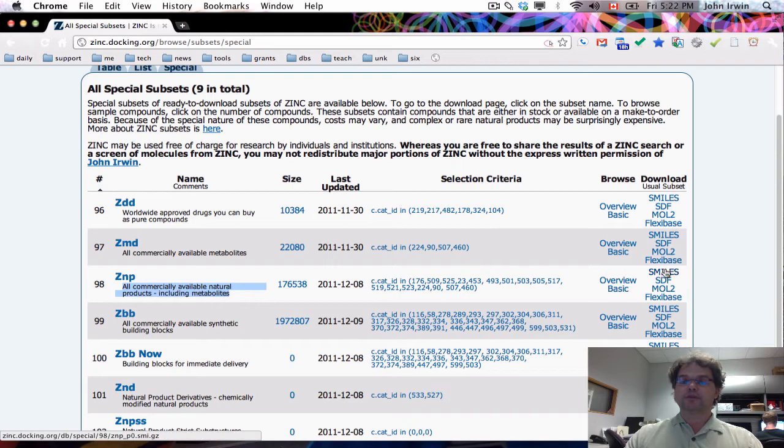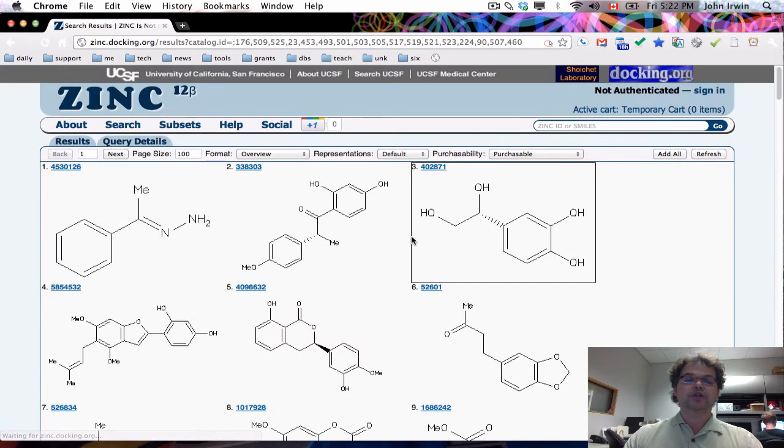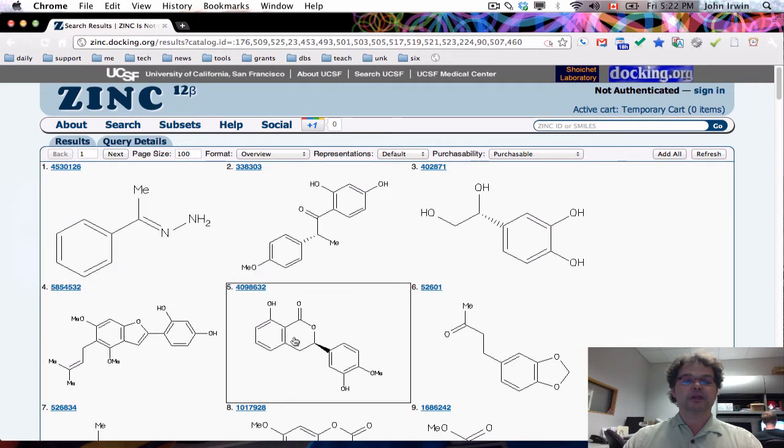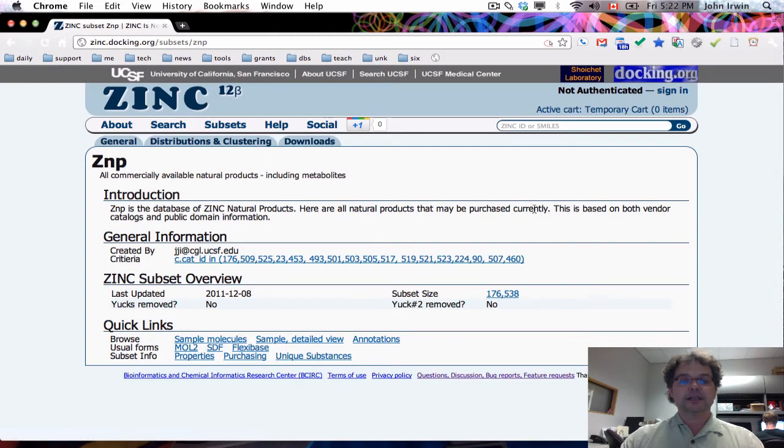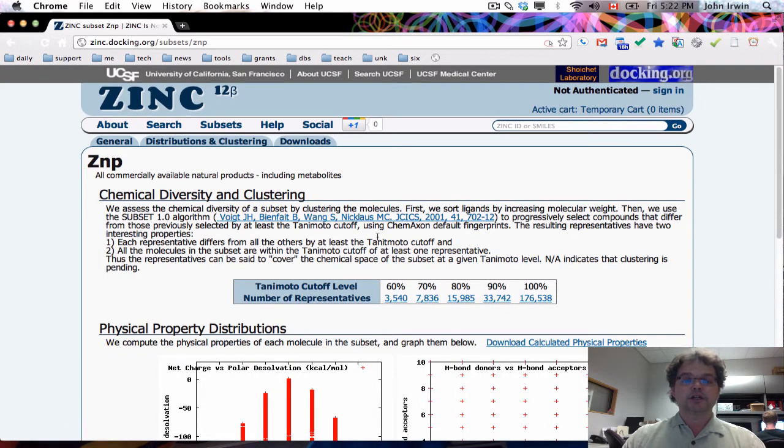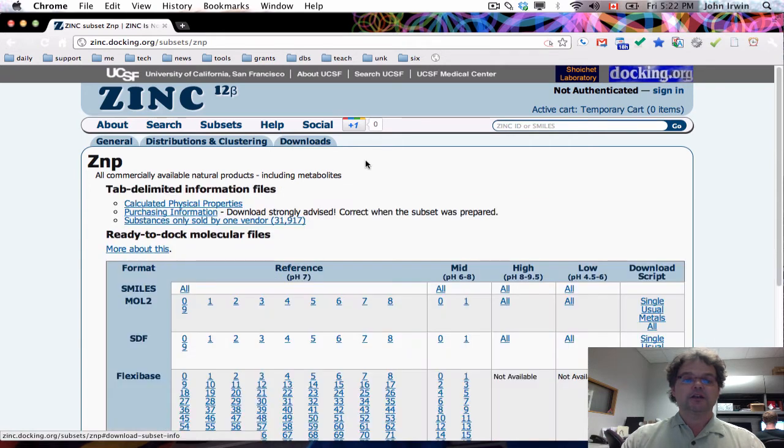You can simply download them. You can download them in SMILES, SDF, MOL2. You can also simply just go in and look at them for yourself and decide if you believe that they really are natural products. These ones sure do look like natural products. And if you click on the ZNP, then you can get a detail page. It looks just like another subset in ZINC. And then you're going to be able to look at distributions and clustering and the download page.